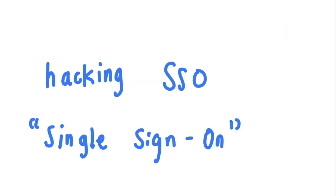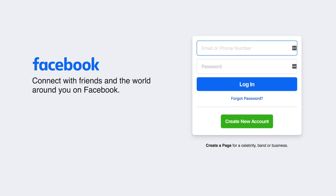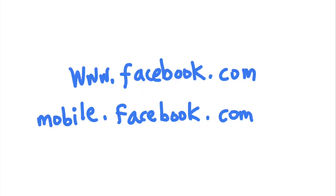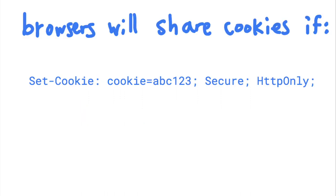Single sign-on is a feature that allows users to access multiple services without logging in multiple times. For example, if you were logged into Facebook, you wouldn't have to re-enter your credentials to use Messenger. The implementation of SSO is easy if the multiple services are located under the same parent domain, like these two versions of Facebook. These two services have the same parent domain, facebook.com.